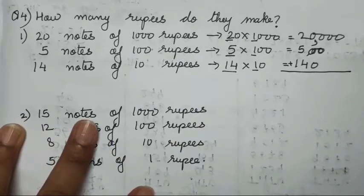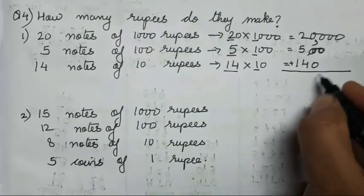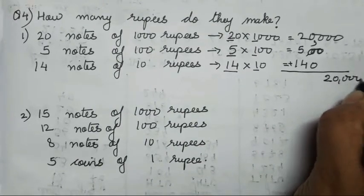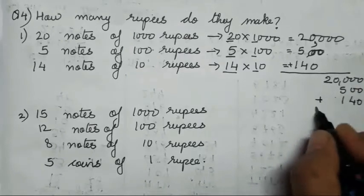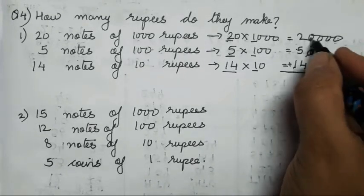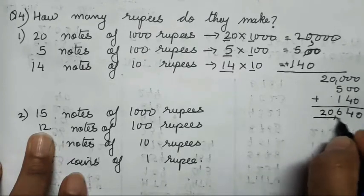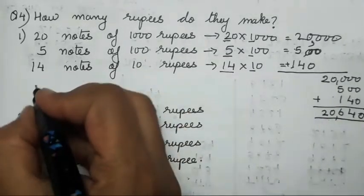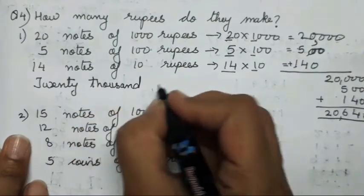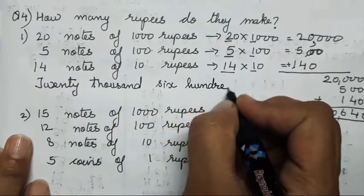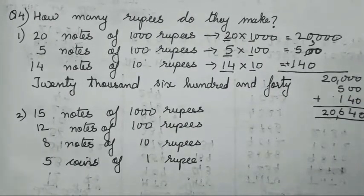I will write it again in the form of addition — that is 20,000 plus 500 plus 140. Unit, tens, hundred, unit, tens, hundred, thousand, ten thousand. So adding these gives 20,640. The total is twenty thousand six hundred and forty.